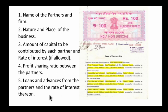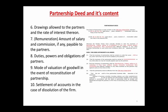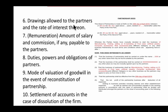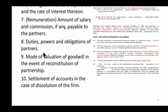Point 6 is drawings allowed to the partners and the rate of interest thereon, if applicable. Point 7 is remuneration — which means salary, commission, or profit given to partners. The amount of salary and commission, if any, payable to partners must be disclosed. Point 8 covers duties, powers, and obligations of the partners. Point 9 is the mode of valuation of goodwill in the event of reconstitution of the partnership — which includes change in profit sharing ratio, admission, retirement, or death of a partner. Point 10 is the settlement of accounts in case of dissolution of the firm.